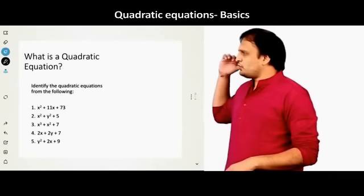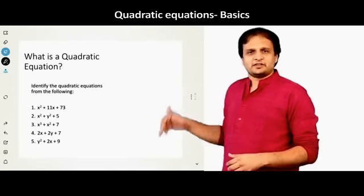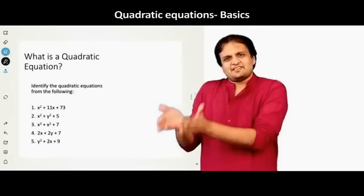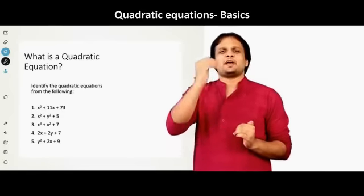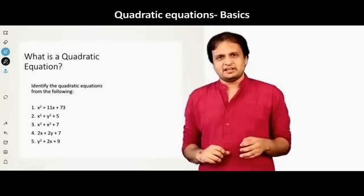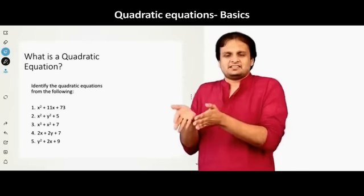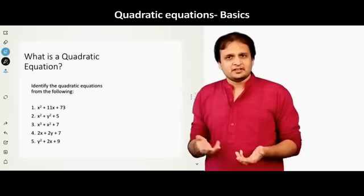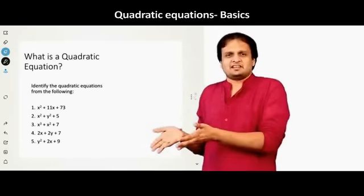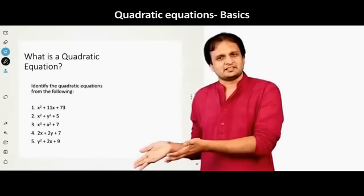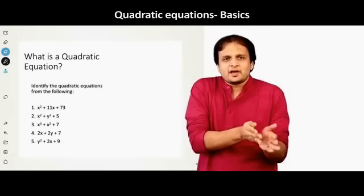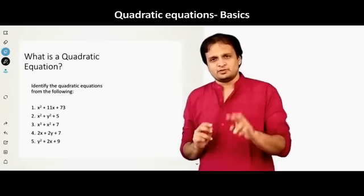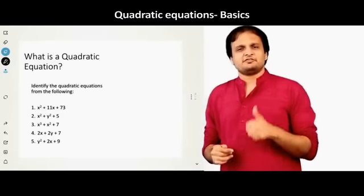Okay. So now if you look at it, let us go to each of these one by one. So let us look at the first one. The first one says x square plus 11x plus 73. So when I say x square, what is the power of x? 2. Then I say 11x. So what is the power of x here? So when it is just x, that means it is x raised to 1. So the power here is 1 plus 73, which is a constant term. There is no x here. So if you look at the highest power here, x square plus 11x plus 73, the highest power is in x square. What is that power? 2. Hence, it is quadratic. So the first one is quadratic.